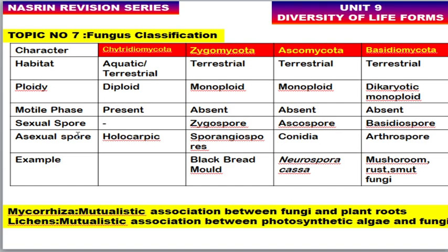Before studying fungus classification, note that mycorrhiza is a mutualistic association between fungus and plant roots, and lichen is a mutualistic association between photosynthetic algae and fungi. Fungi are classified into four types: Chytridiomycota, Zygomycota, Ascomycota, and Basidiomycota.